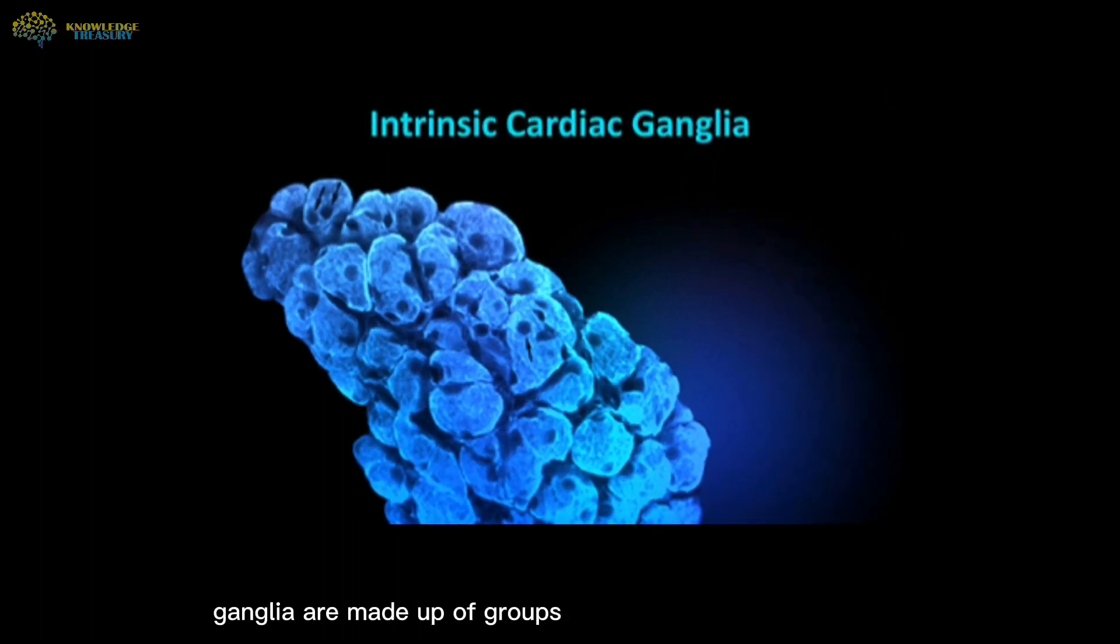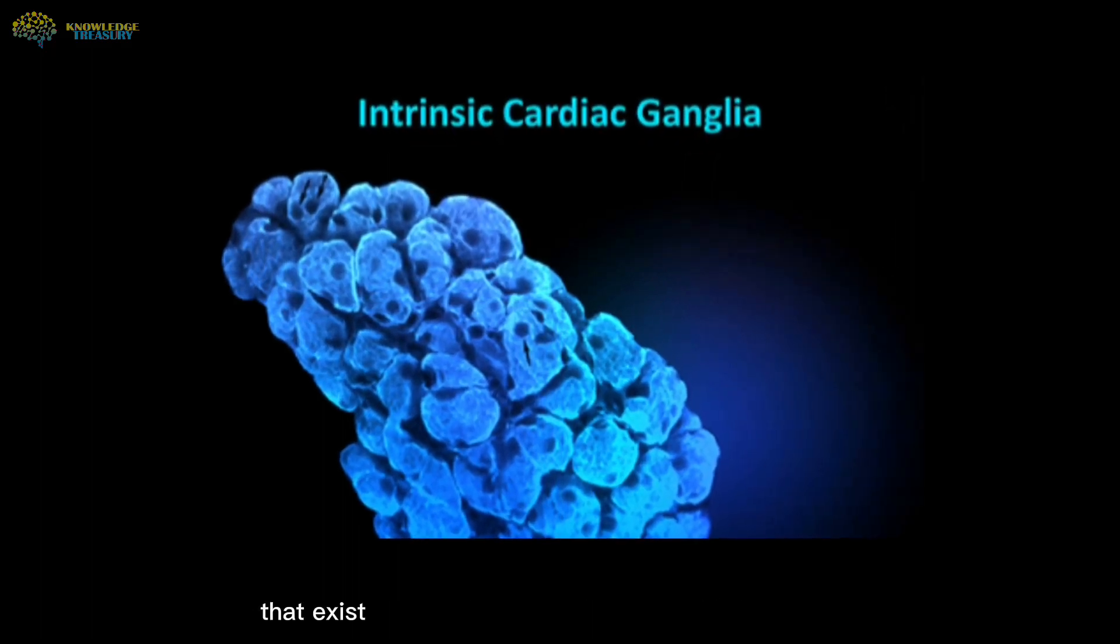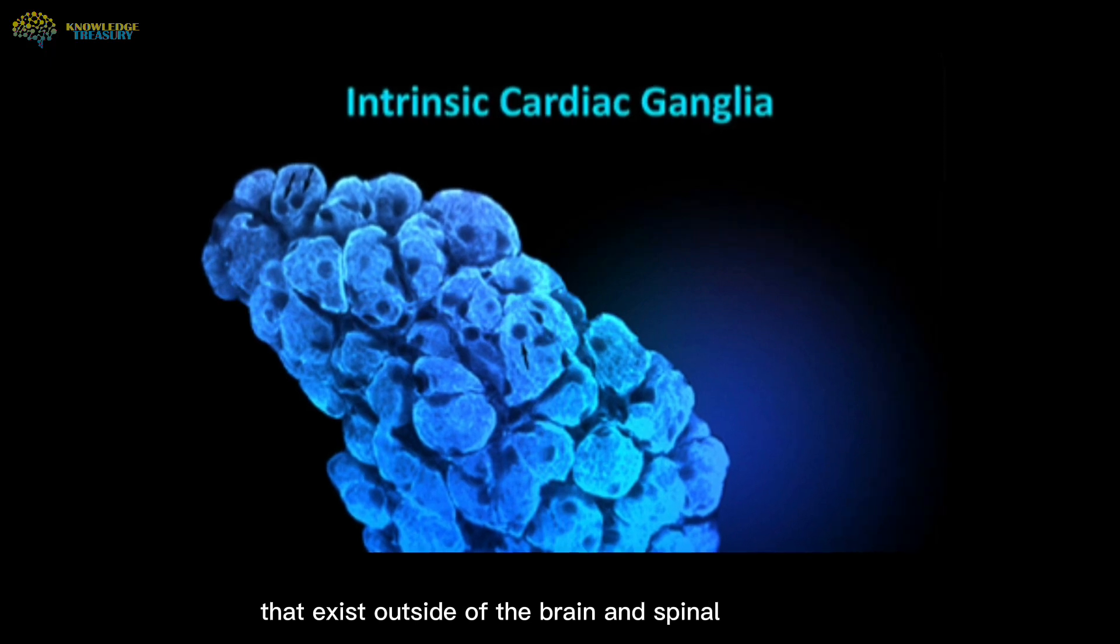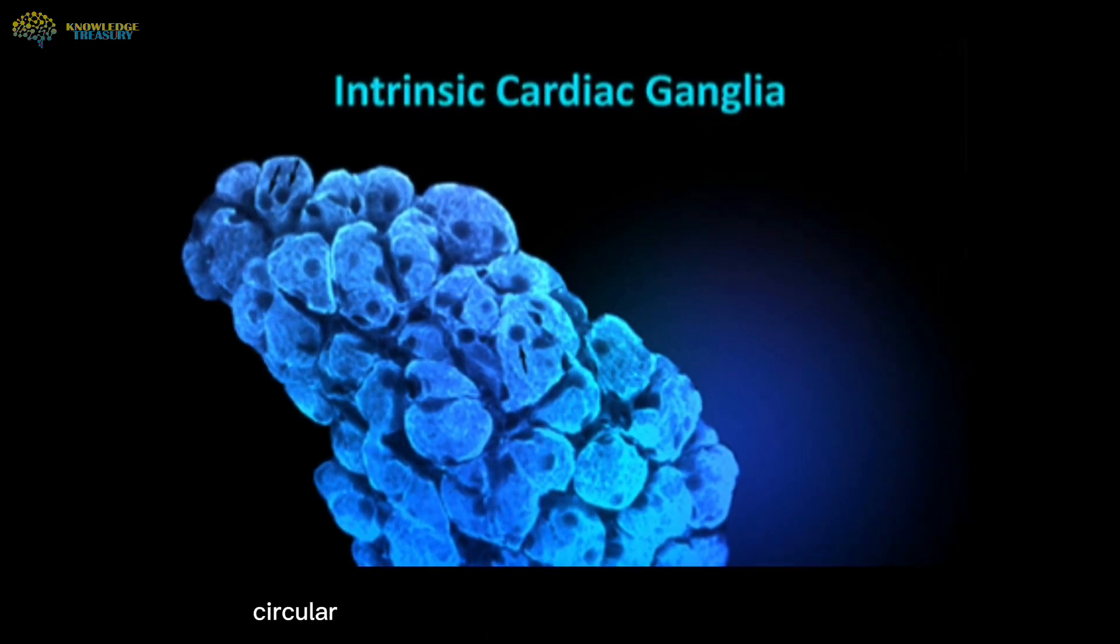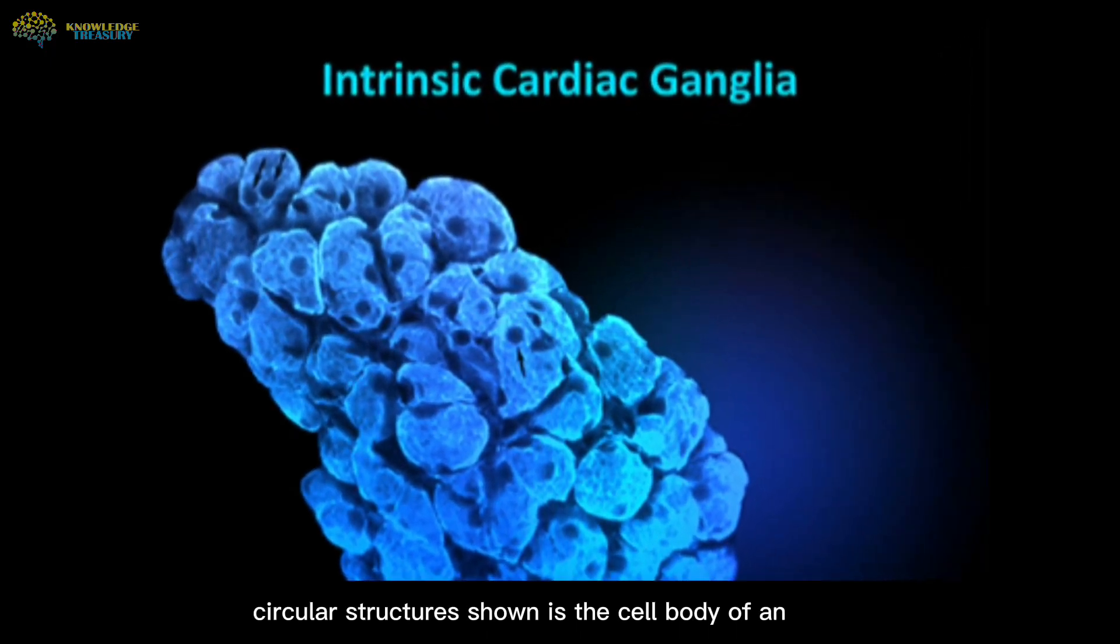Ganglia are made up of groups of nerve cell somata that exist outside of the brain and spinal cord. Each of the smaller circular structures shown is the cell body of an individual neuron.